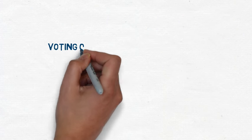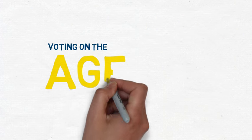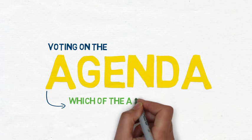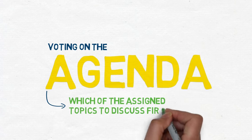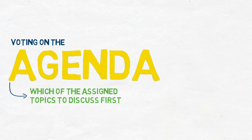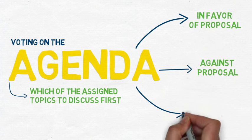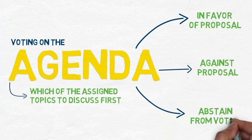After roll call, the group can vote on the agenda and decide which of the assigned topics to discuss first. Delegates can vote in favor of a proposal, against a proposal, or abstain from voting.